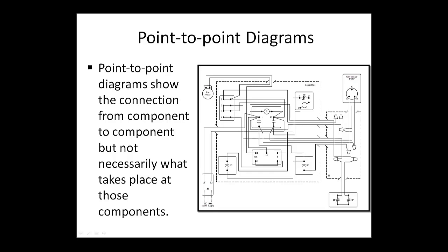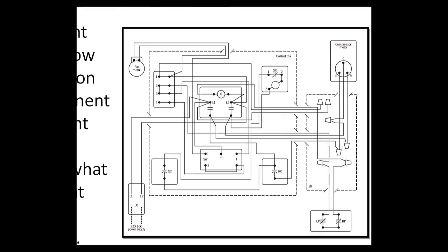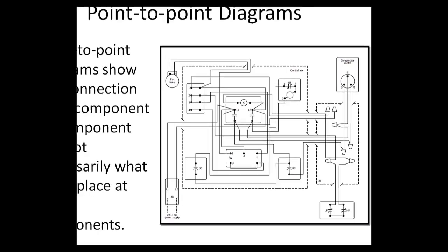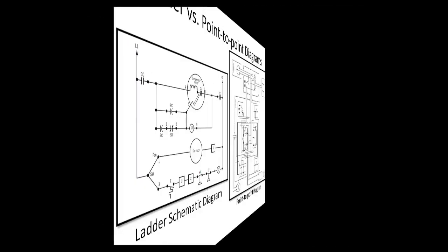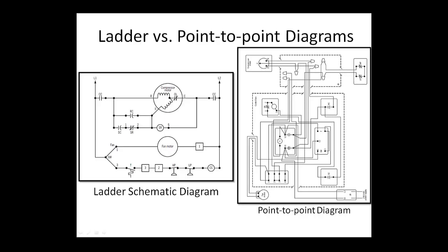Point-to-point diagrams show the actual physical wiring connections as they are made at the factory. Because it is difficult to trace individual circuits, these diagrams are not intended to be used for determining sequences of operation or for troubleshooting. For example, consider the point-to-point drawing for a heat pump circuit shown on this slide — it would be extremely difficult to follow the sequence of operation. Notice how much easier it is to determine the sequence of operation when reading the ladder schematic. You can see why ladder schematics are better suited for use as troubleshooting tools, rather than point-to-point diagrams.